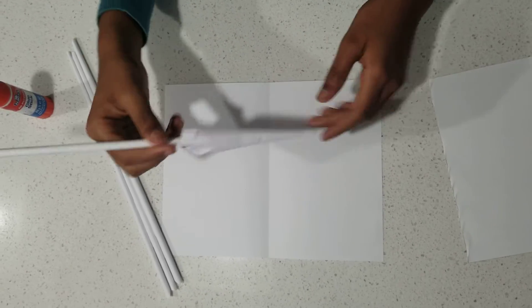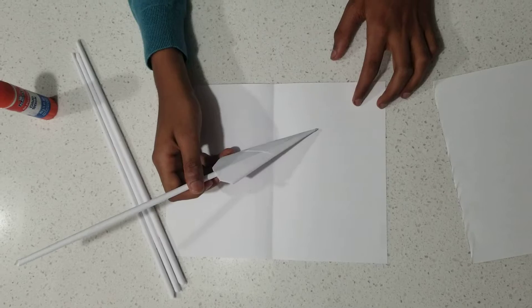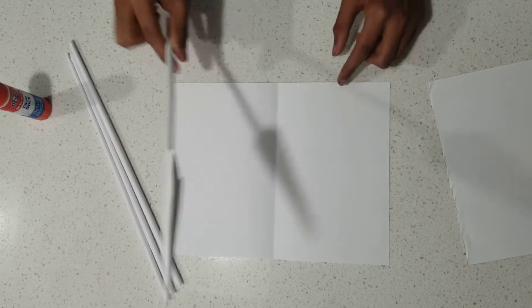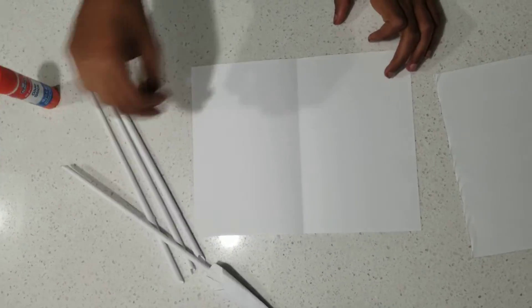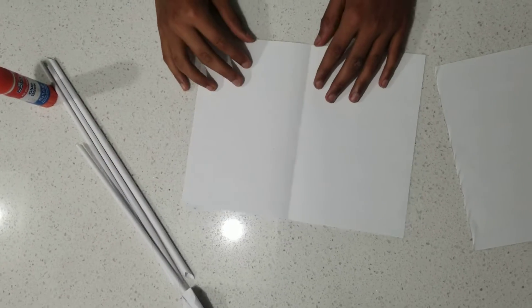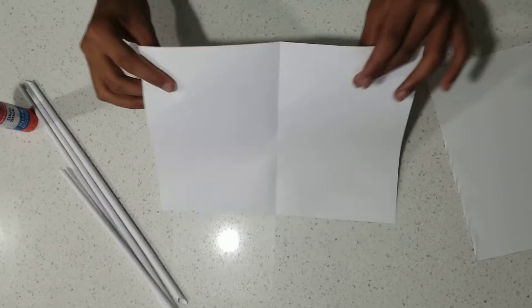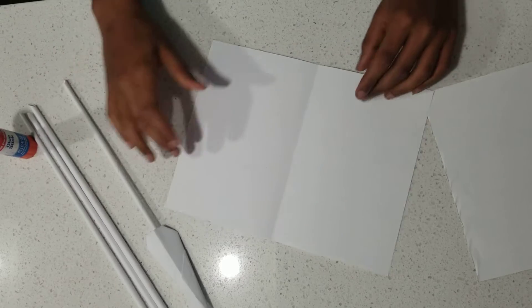Today we're going to be making an arrow, or for the pretentious of you, a pen. Use it as a deadly weapon, use it as a thing—I don't care. I'll just be teaching you how to fold it. To make an arrow, we need to start off with a piece of paper.